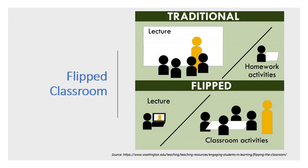The flipped classroom model presents students with introductory material outside the classroom, resulting in a reduction of hours the student is required to attend class. For example, if a program met three times per week for one hour — a total of three hours a week — much of that time used for introductory material could essentially be given as homework, thus reducing the amount of face-to-face time required or allowing that three hours to be spent in more engaging work. This method can also create a more interactive learning experience with more positive outcomes.